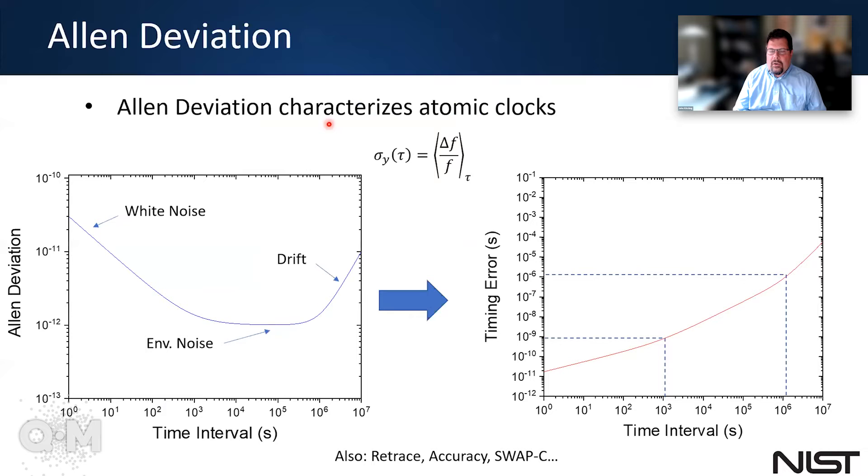So the main way that we characterize clocks is through something called the Allen deviation. And you'll probably hear or see some Allen deviations presented during the next hour or so. Typically, the Allen deviation is just basically the fractional frequency instability of the clock for some averaging time tau.